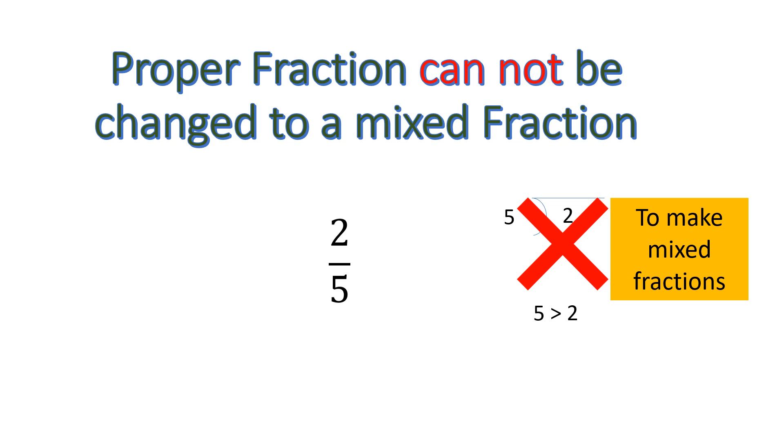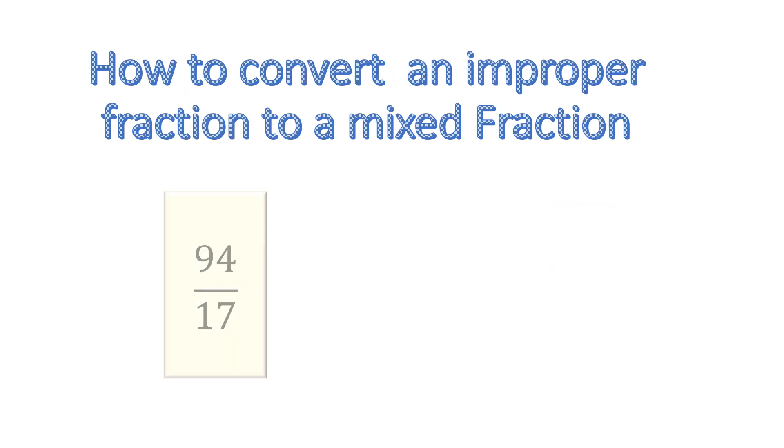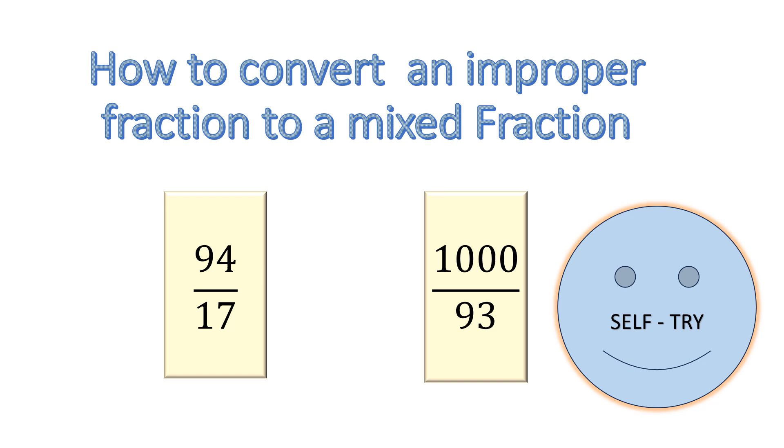We can divide it to change it into decimal and everything, but we cannot do this problem for a mixed fraction. So there are some more examples. 94 over 17, 1000 over 93. So you can please try it on yourself and give the answers in the comment section.